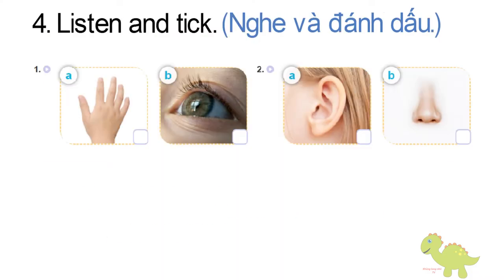Page 29, Lesson 1, Activity 4. Listen and tick. 1. What's this? It's a hand. 2. What's this? It's an ear.